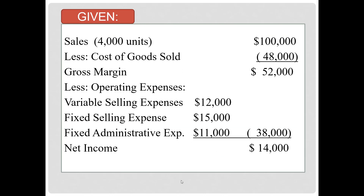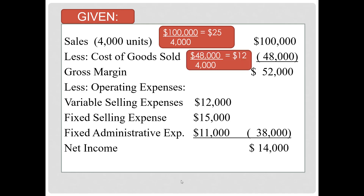If sales increase from 4,000 to 5,000 units, total sales dollars will change. We need to adjust the $100,000 to reflect an extra 1,000 units of sales. The easiest way is to determine that the sales price was $25 per unit — $100,000 of sales for 4,000 units gives $25 per unit. Because this is a distributor, their cost of goods sold behaves like a variable cost — every time they sell a unit, this cost goes up in direct proportion. So we calculate a cost per unit: $48,000 divided by 4,000 units gives cost of goods sold of $12 per unit.